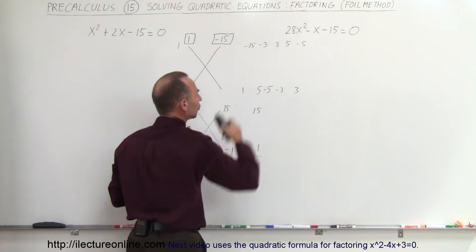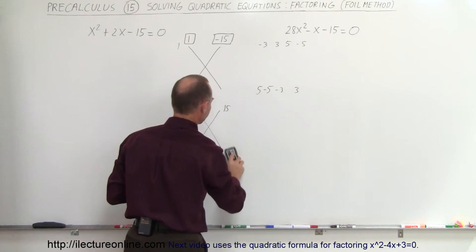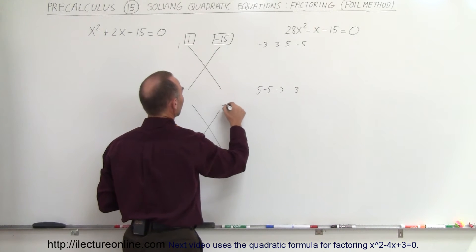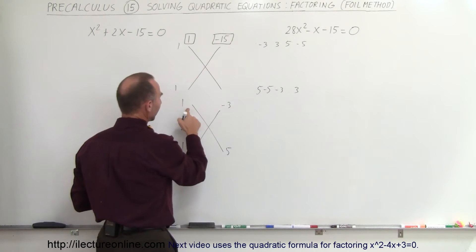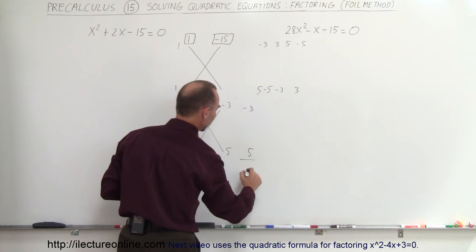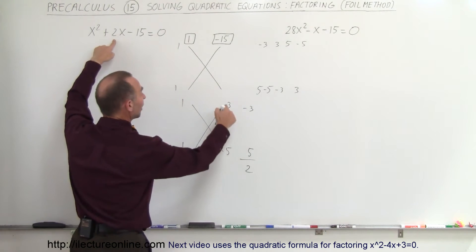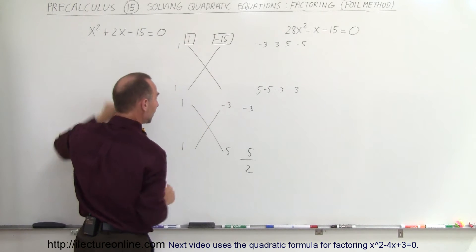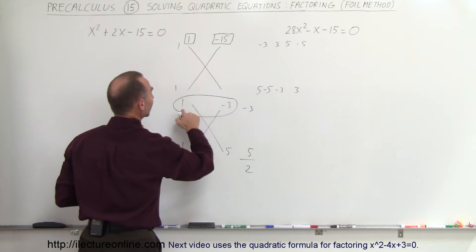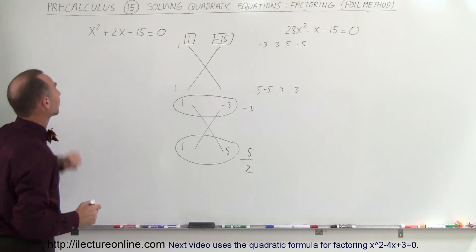So now try the next combination — you realize that 1 and minus 15 will probably not work either. How about negative 3 and positive 5? So 1 times 5 is 5, and 1 times negative 3 is negative 3. When you add those two together you get 2. Bingo! You've found the right combination because that's what you're looking for. Negative 3 and 5 is the proper combination, and therefore when we factor we can write 1x minus 3 and 1x plus 5.